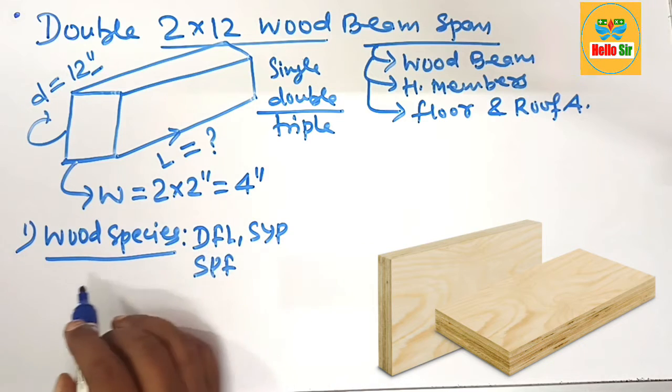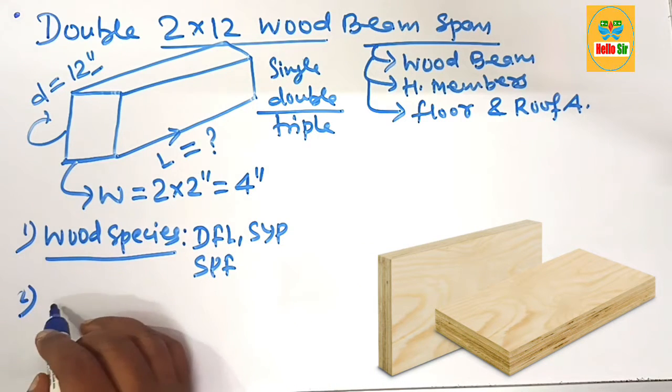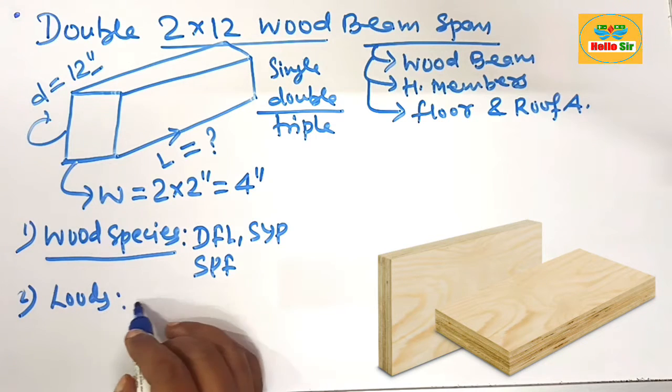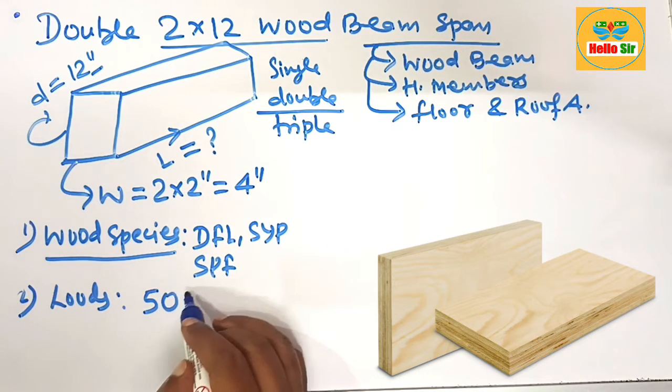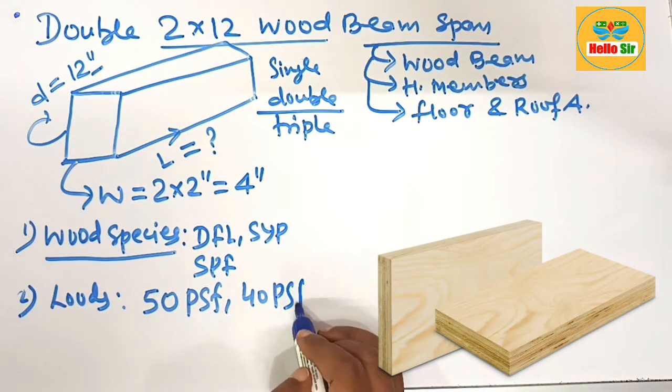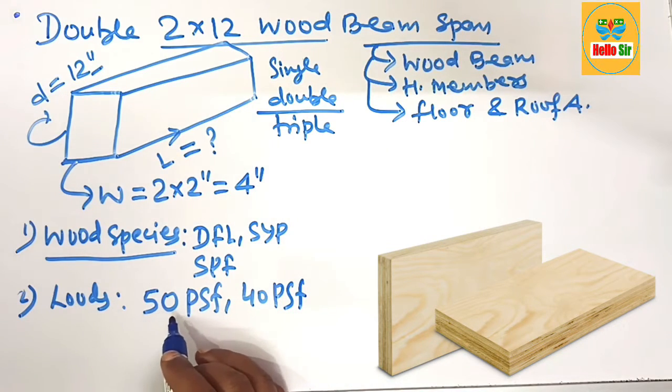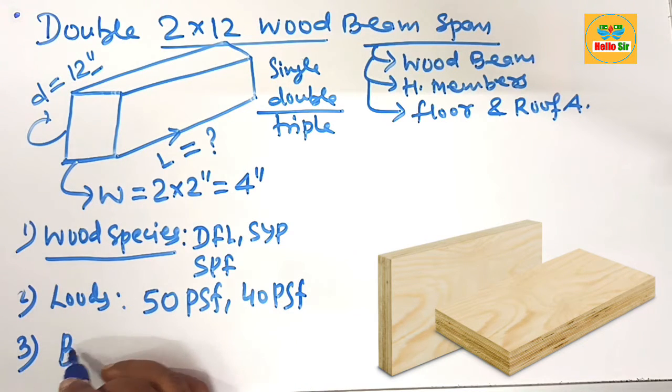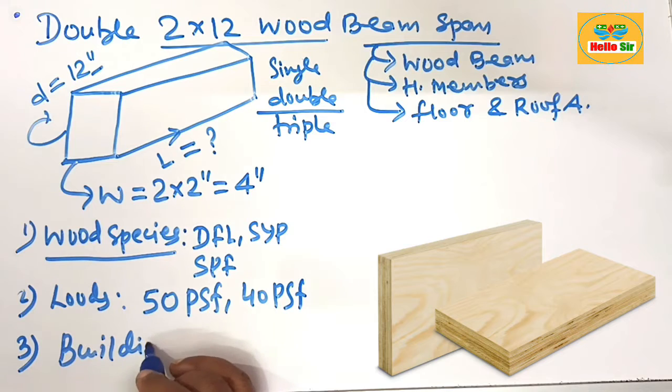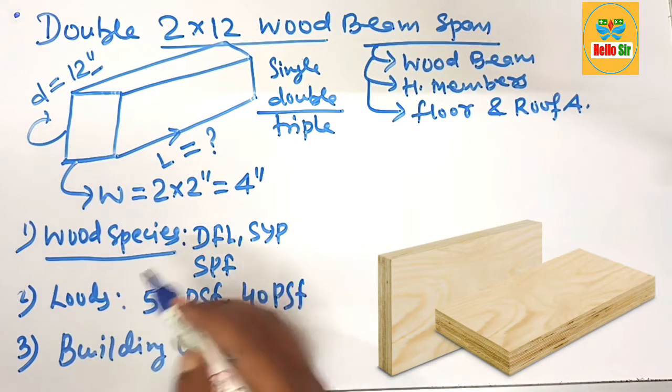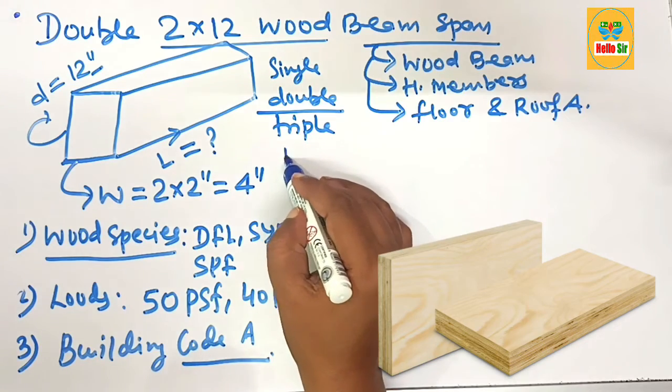The second factor is expected load - it may be 50 PSF or 40 PSF, containing the dead load and live load of the structure. The third factor is the building code in your area.